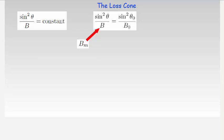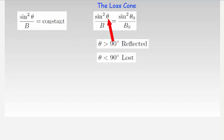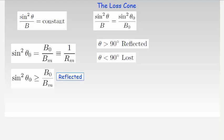Note that the particle will be reflected if the angle is greater than 90 degrees and lost if it is less than 90 degrees. Substituting b equals bm and θ equals 90 degrees in the conservation equation results in this condition for particle reflection or loss, where sin²θ is the ratio of b0 on bm. That is, the particle will be reflected if sin²θ0 is greater than the ratio of the magnetic fields, and will be lost if it is less.